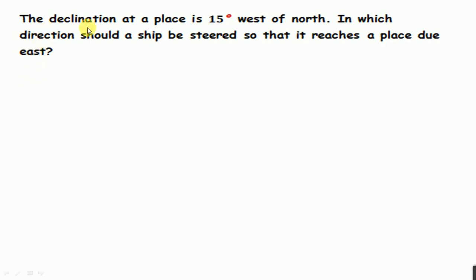The first question is: the declination at a place is 15 degrees west of north. In which direction should a ship be steered so that it reaches a place due east?